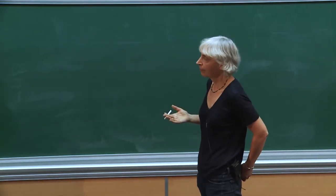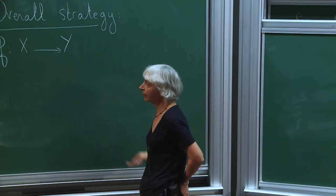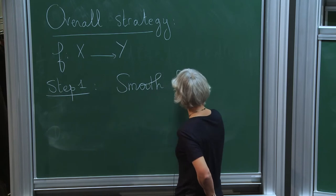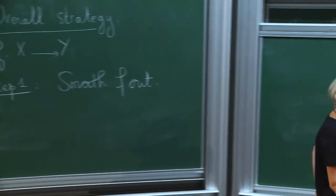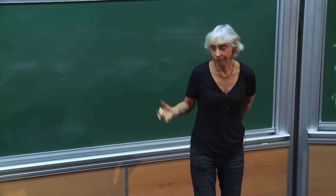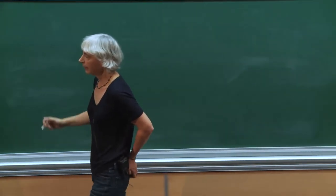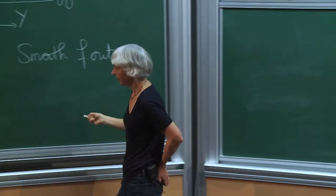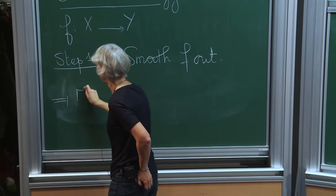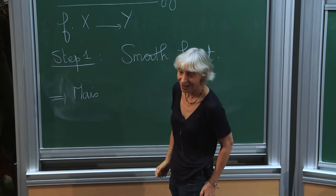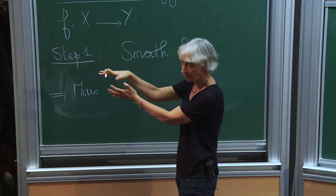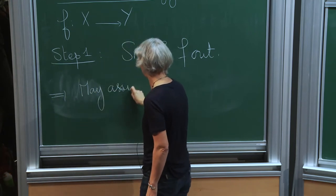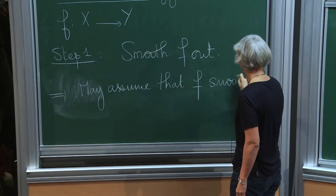So in order to make this strategy work, the right move is to begin by smoothing F out. So the target manifold is a Hadamard manifold, so you can use a center of mass procedure basically. And then this builds a smooth map which is within a bounded distance from F and which is smooth with bounded derivatives. So we may assume that F is smooth with bounded derivatives.